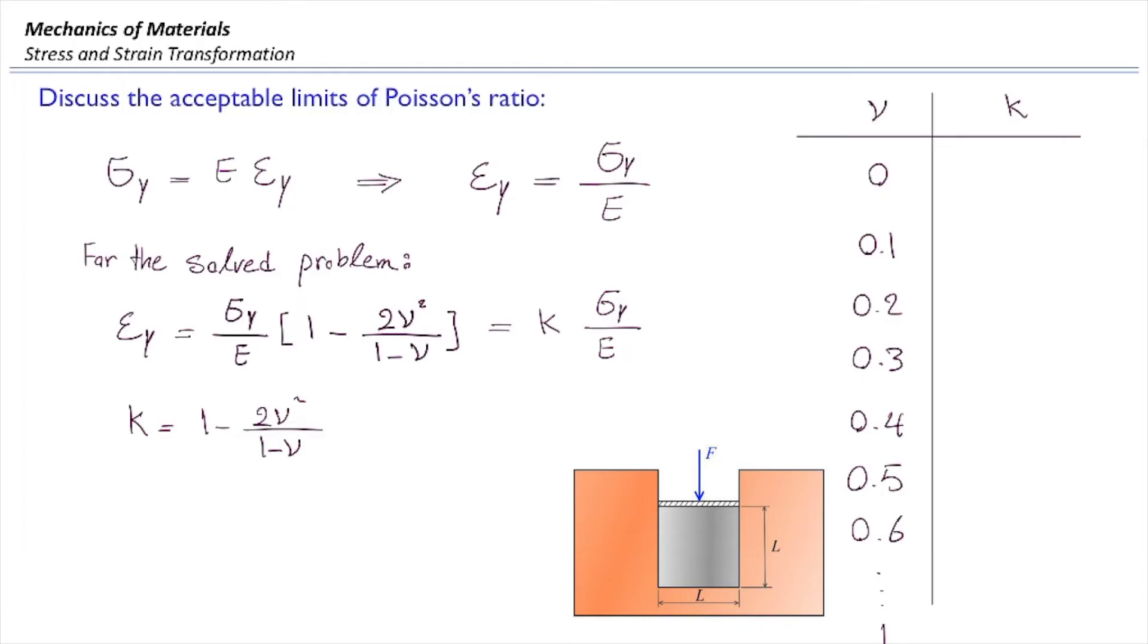What is the k-value if ν is equal to 0? That would be equal to 1. What does it mean? k-factor of 1 means that if we have epsilon y in the problem that we had which is contained by a rigid container, the relationship between stress and strain would be like this. This is the same case as we had in the first part. I want you to pause here and discuss and tell me what does it mean physically.